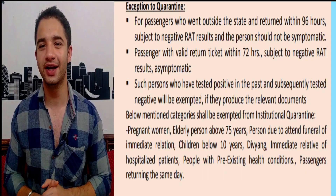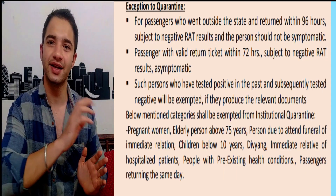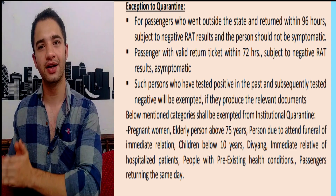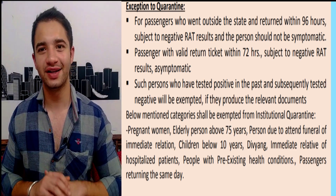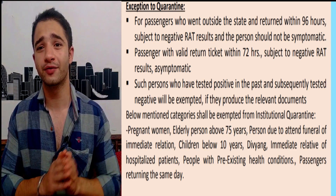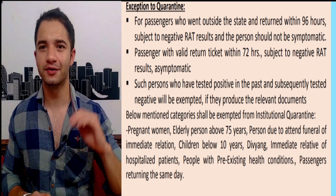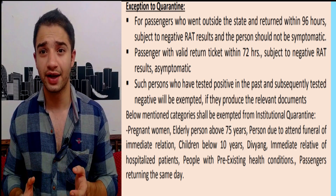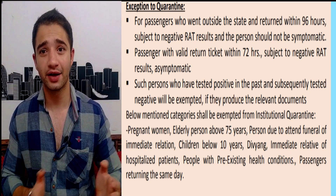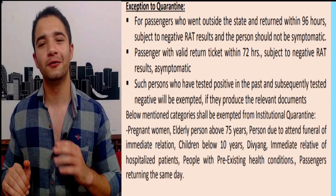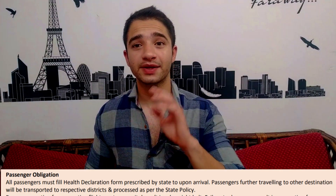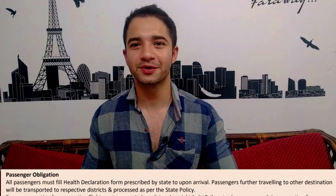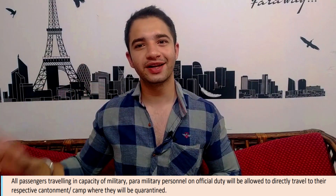Some people have exemptions. For those traveling from Assam, if you have an RT-PCR report within 96 hours, you can show it and don't have to worry. People who don't have to quarantine in an institution include pregnant women, those over 75 years old, disabled persons, those going to a funeral, and children under 10 years old. They will be allowed to stay at home. If you travel from Assam, you will have to fill a self-declaration form. And if you are in the army, you will go directly to the Assam airport and proceed to the cantonment area without quarantine.